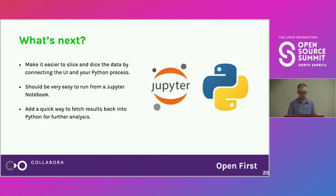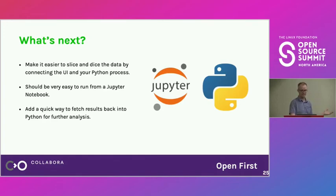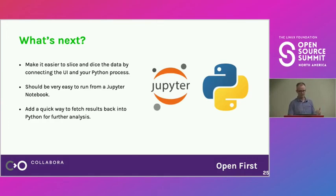We'd like to make it more useful for your particular problems. We want to integrate it so you can run it straight from Jupyter notebooks — preparing JSON files separately is cumbersome. It would be great if you could go back and forth: attach labels, mark which images are okay or not, and then slice the results further in Jupyter or Python.